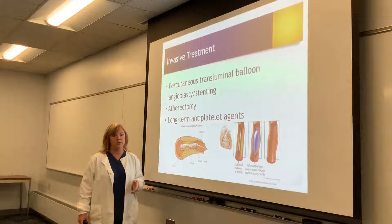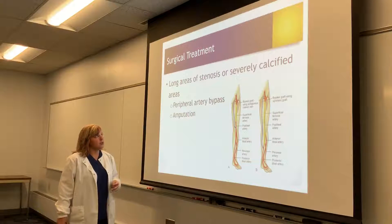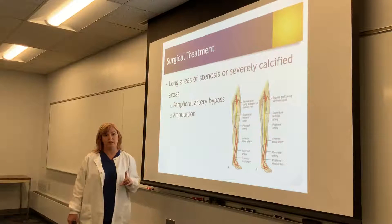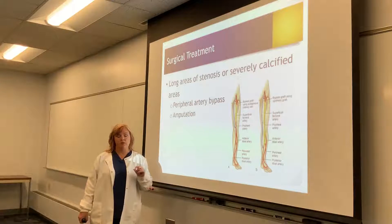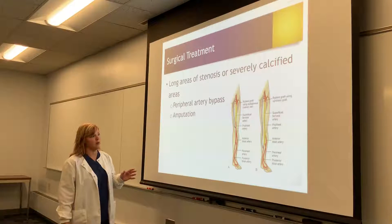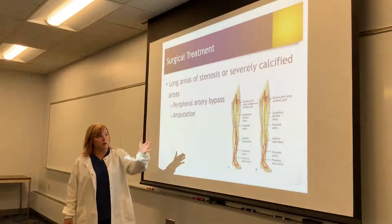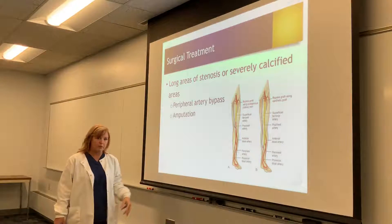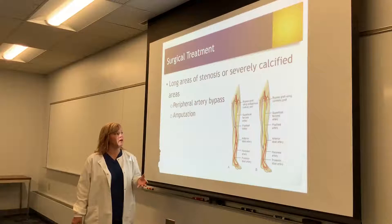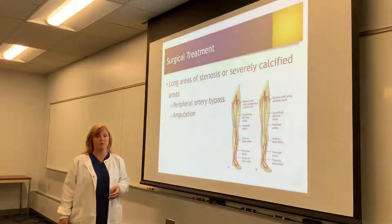These patients are going to be on long-term antiplatelet agents: aspirin and Plavix. There is also an option for surgical treatment. If there are very long areas of stenosis or very calcified areas where a stent can't be placed, the patient will need a peripheral artery bypass — using a graft to reroute blood around that occluded area to bring blood flow to the lower extremity. If those are not possible, or they fail, or the patient has a large infection in that lower extremity, amputation is often the surgical treatment.